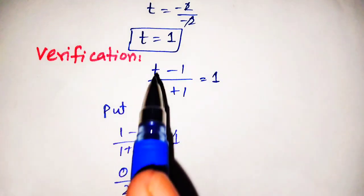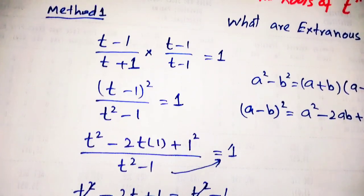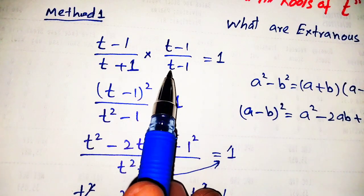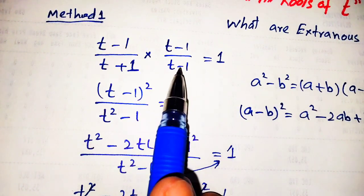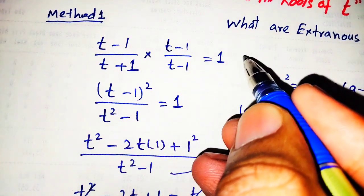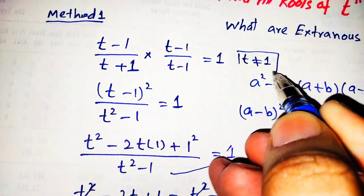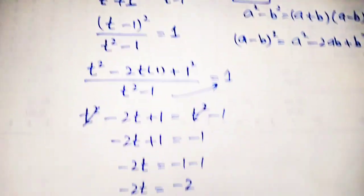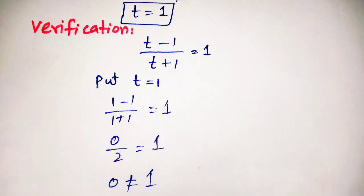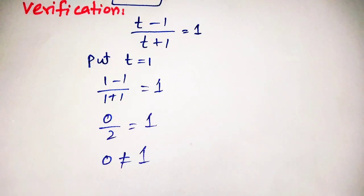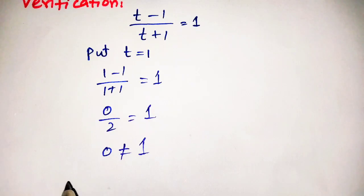Hence this root t equals 1 does not satisfy the given equation. Furthermore, at the start we multiplied and divided by t minus 1, which also shows that t cannot be equal to 1. So t equals 1 is not a valid solution, and we also verified it by substitution. Since this solution does not satisfy the given equation, we call it an extraneous root.